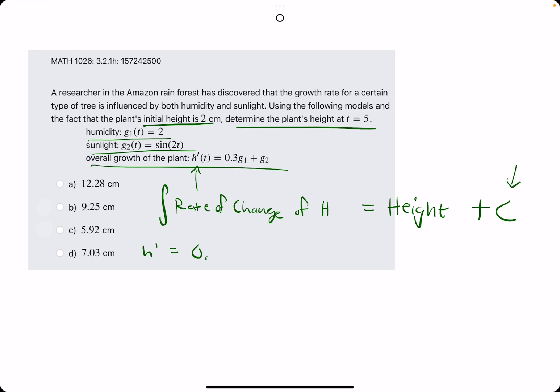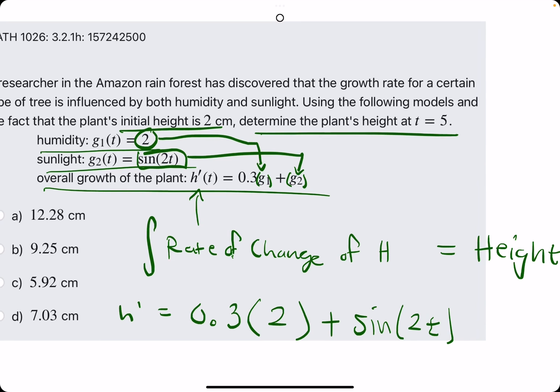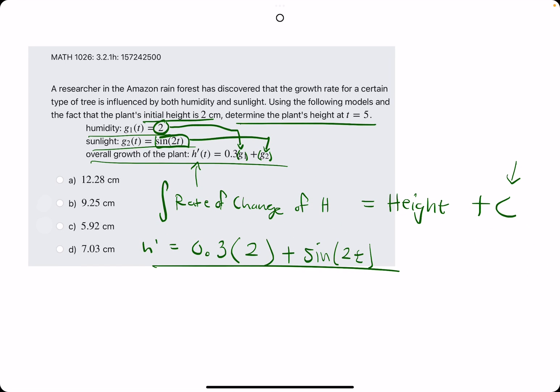h prime is 0.3 times g1, which they tell us is 2, and then plus g2, which is sine of 2t. So I'm taking 2 and plugging it in here, taking sine of 2t, plugging it in here to have h prime.